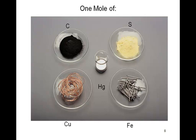So, here we have one mole of carbon, one mole of copper, one mole of iron, one mole of sulfur, and one mole of mercury. You can see that they are all different sizes and all different quantities because their densities are different and their masses are different. Each of these substances has a different atomic mass and so they will be more or less of a particular element because its atomic mass is different.